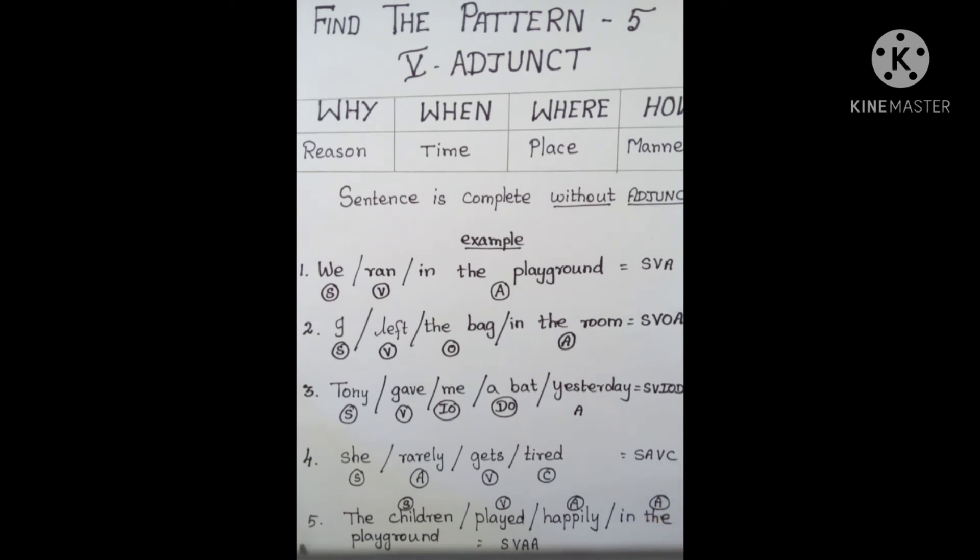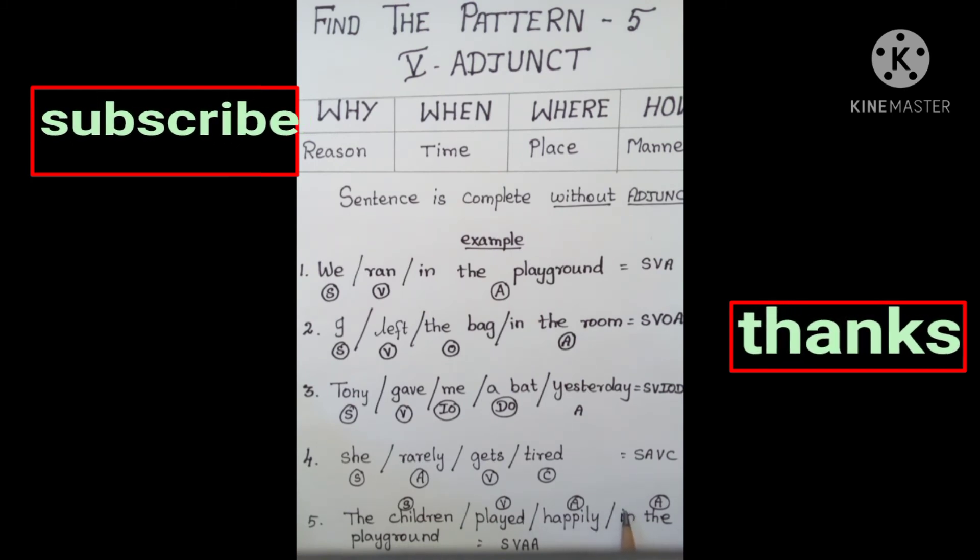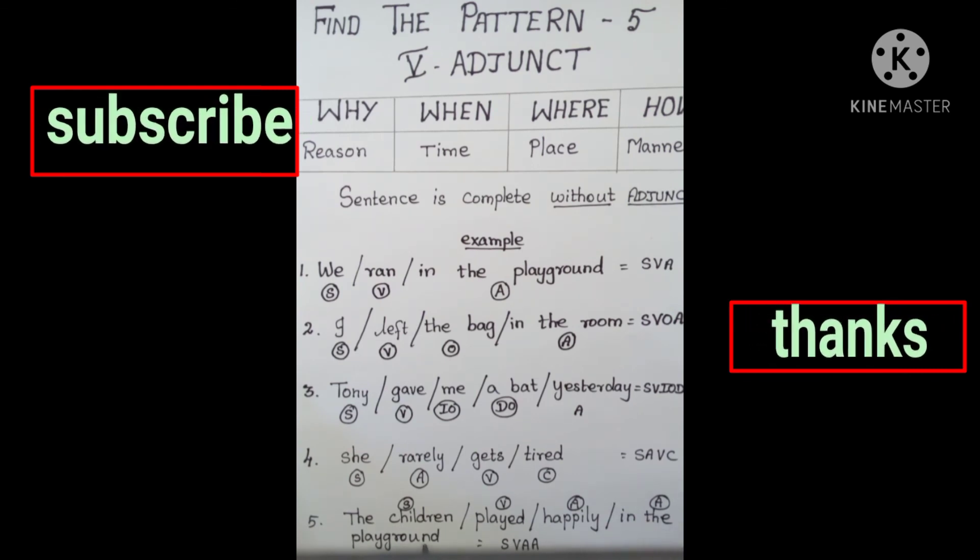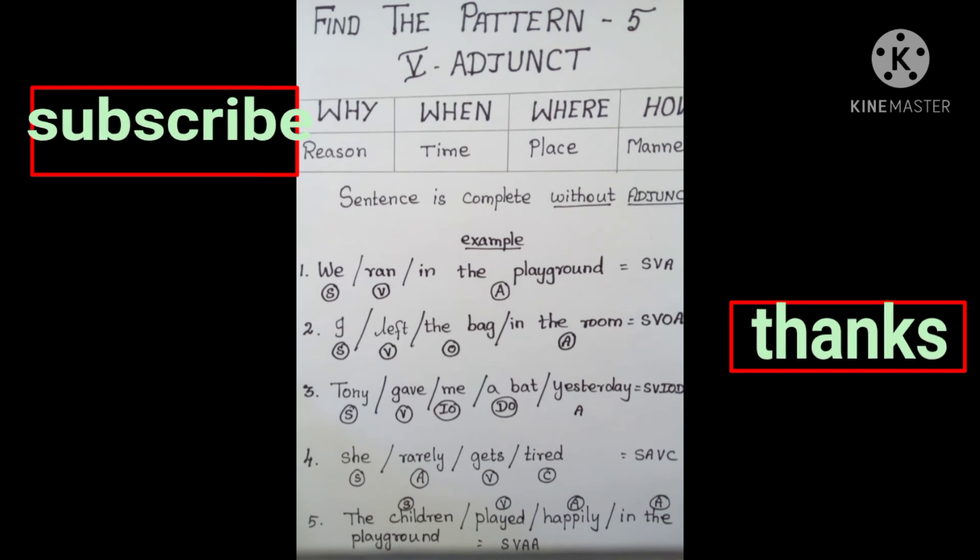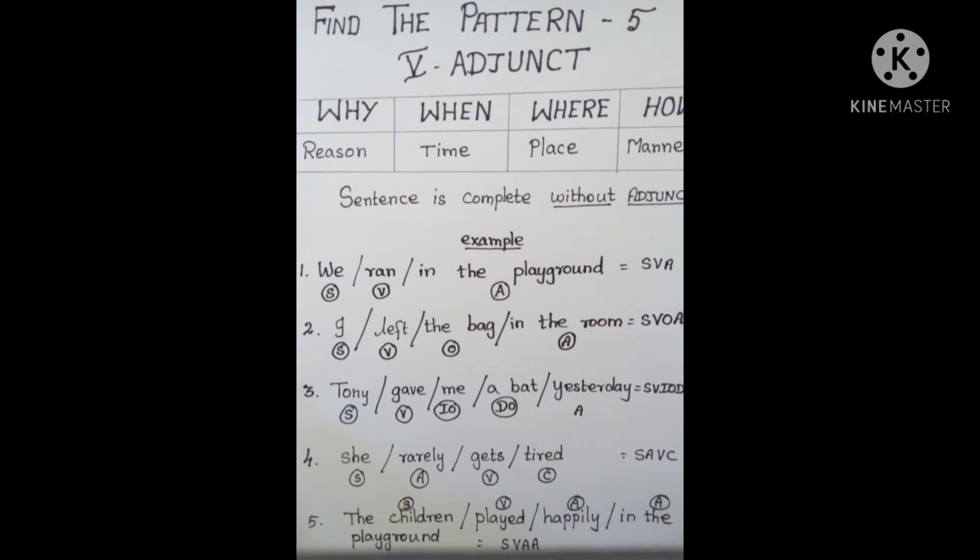Let's look at the fifth sentence: the children played happily in the playground. The children is subject, played is verb, happily is the adjunct. If you remove in the playground, you still have meaning. So in this sentence we have two adjuncts: happily and in the playground. That's why the sentence pattern is S V A A.